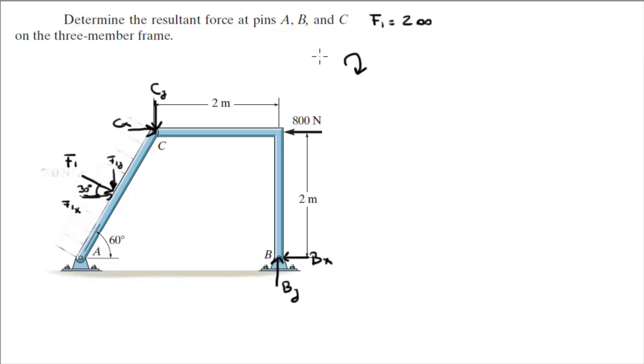Now, assuming clockwise is positive, sum of the moments at B is equal to 0 and is equal to CX times 2 minus CY times 2 minus 800 times 2. So, you're at B. You get the moment created by this 800N force trying to turn this arm of 2 meters by 2 counterclockwise, so it's negative.